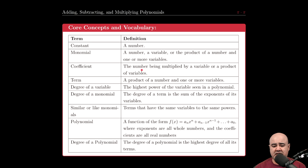Coefficient is the number out front, or it's the number being multiplied by the variable or a product of variables. So in 3X, the coefficient is 3. In 3XY, the coefficient is 3.